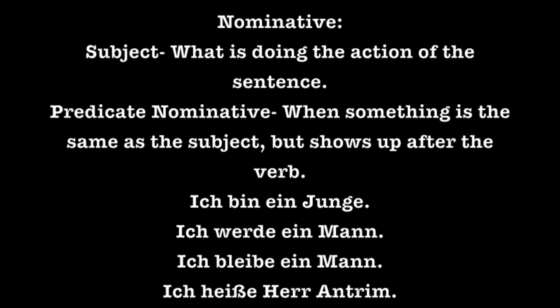That overview really doesn't do us much good until we define all of those words, so we'll start with the nominative case. The subject is what's doing the action of the sentence, so it's what's acting in the sentence. The predicate nominative is when something is the same as the subject but shows up after the verb or later in the sentence. It only works in English that it's after the verb, as German word order can tell you that you can start with something other than the subject.